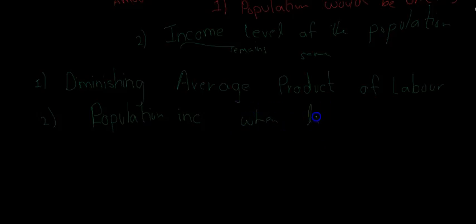Number two was that population increases when living standards increase. This explains how living standards remain quite stagnant, and the population as well, because as living standards increase, population increases, which causes diminishing average product of labor.